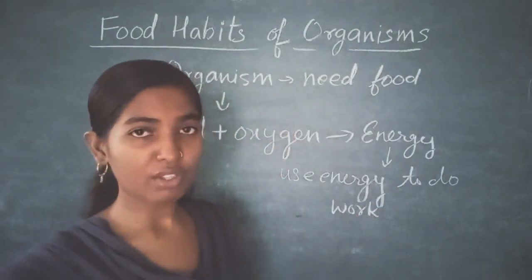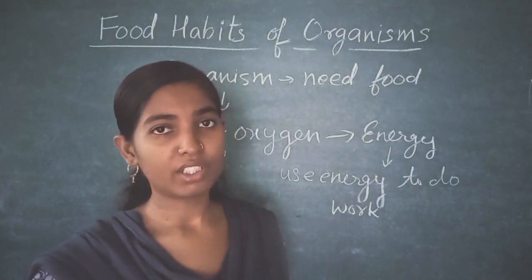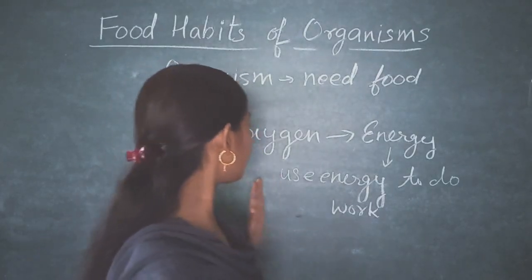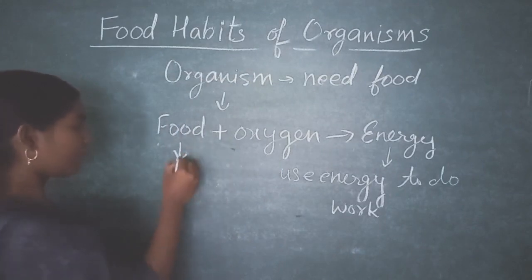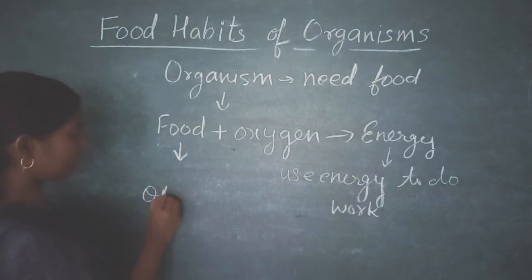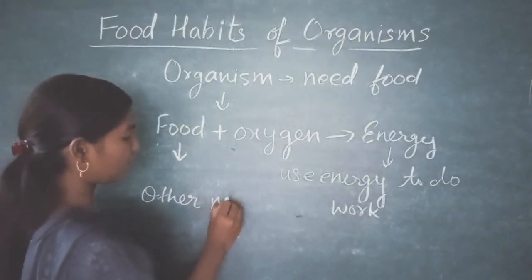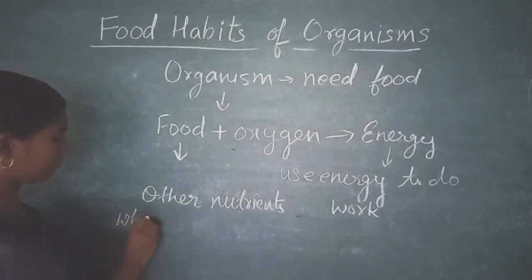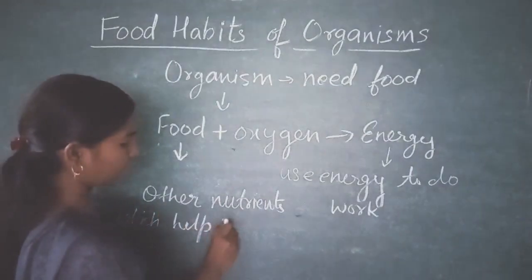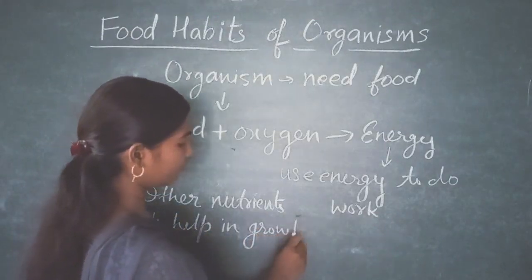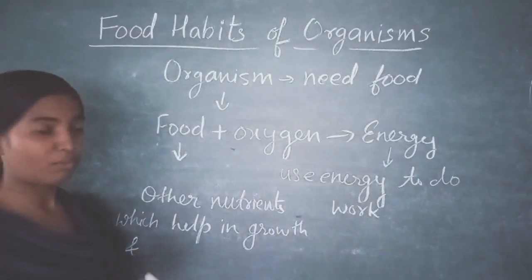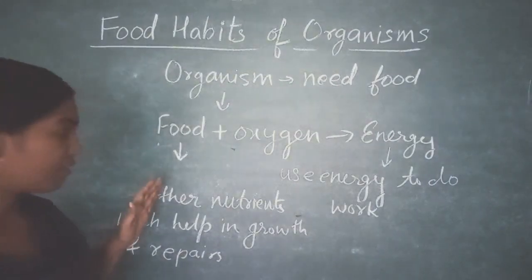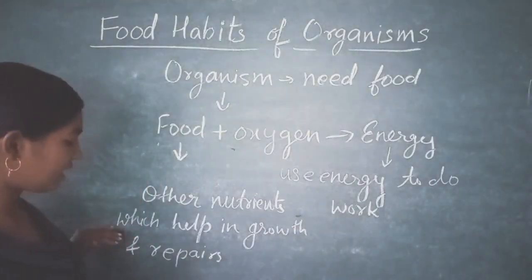Different organisms take different kinds of food, and they use food for various purposes. From food we also get other nutrition, which helps in growth. If there is any damage to the body, food also helps in repairing it. So food is what helps in both the growth as well as the repairing of the body.